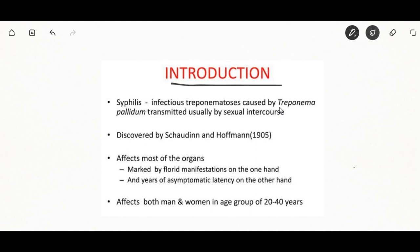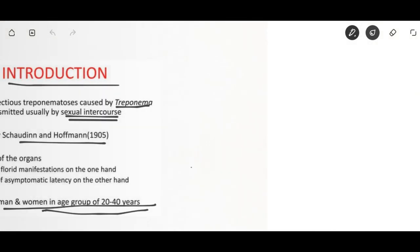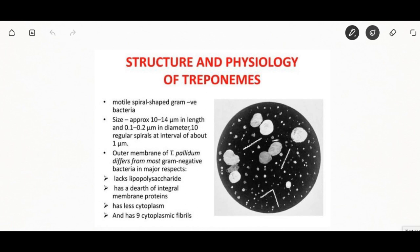The next chronic disease is syphilis, a sexually transmitted infection caused by the bacterium Treponema pallidum, transmitted by sexual intercourse. It was discovered by Schaudinn and Hoffmann and affects both men and women in the age group of 20 to 40 years. The bacteria is spiral-shaped gram-negative with a size of 10 to 14 micrometers in length.